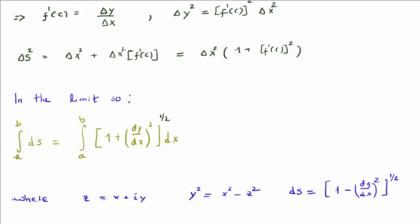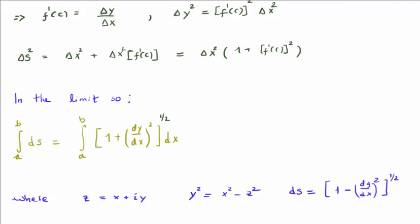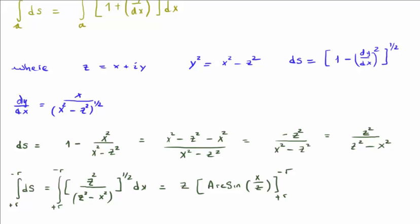What I'm going to do next is see if we can use the differential arc length formula to calculate the circumference of our circle. Of course we know what the answer is but nonetheless we're going to do this for completeness. This means that we need to integrate ds which of course is a function of z. In order to do this we're going to need dy/dx. I've calculated dy/dx here. It's x over √(z² - x²).